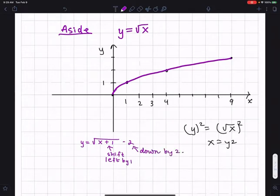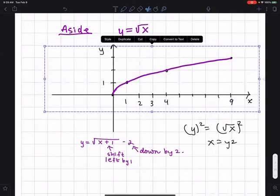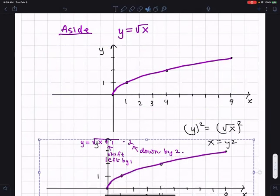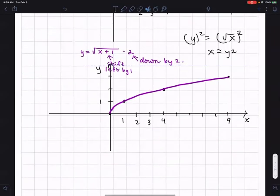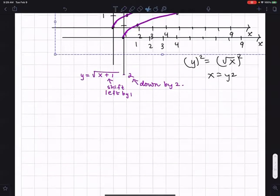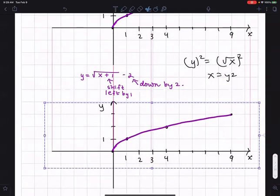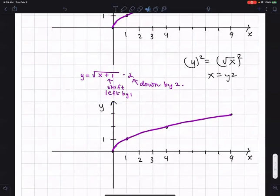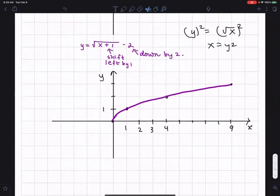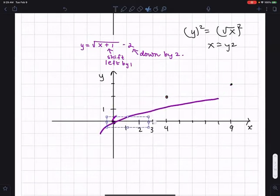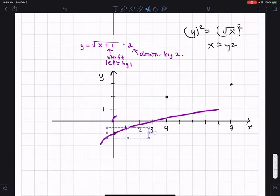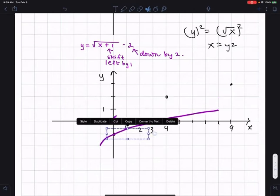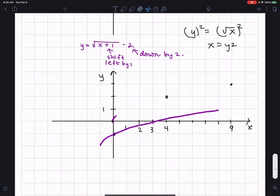What does this do? This shifts left by one, and this is down by two. And of course we can plot points to verify that that's actually the right shifting. Whether you're shifting up or down, right or left, you can verify by plotting points. But I really think we should think that there is a shift. That's what that does.